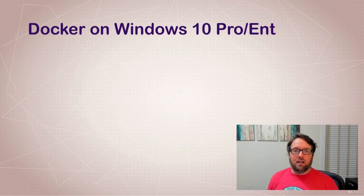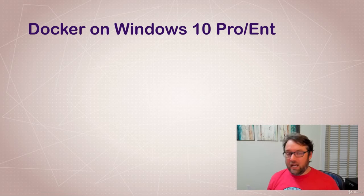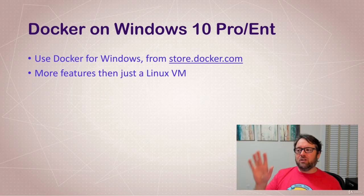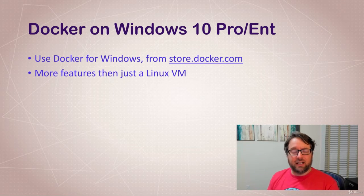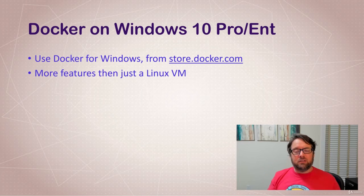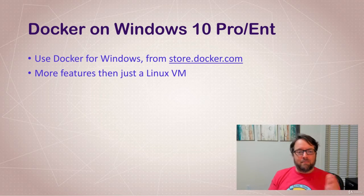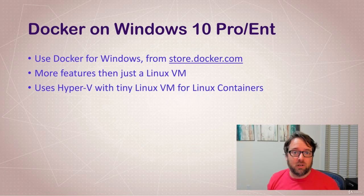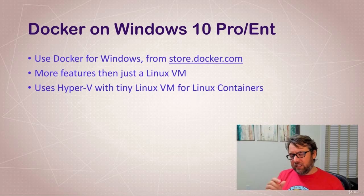If you're on Windows 10 Pro or Enterprise you get to run Docker for Windows, available at store.docker.com. It actually has more features than just installing a Linux VM on your machine — while a Linux VM would work like a production Linux server, Docker for Windows and Docker Toolbox help you develop and test locally, doing things like mapping drives from your host OS into the container. In the background, Docker for Windows uses Hyper-V with a tiny Linux VM to run Linux containers.